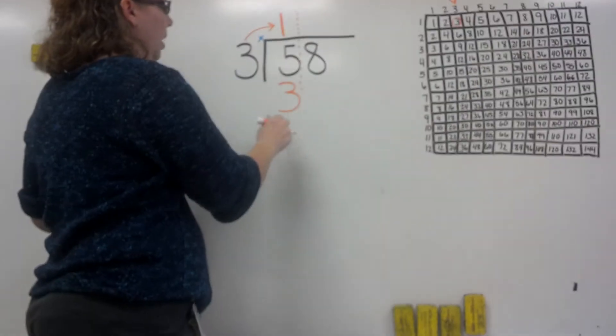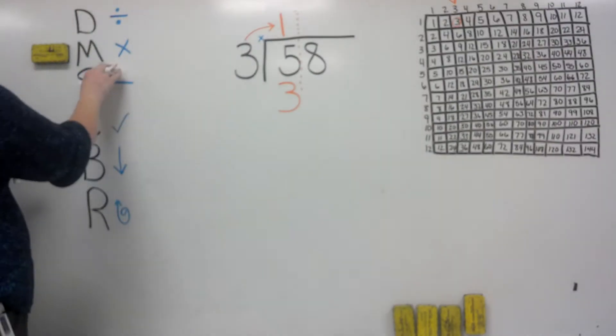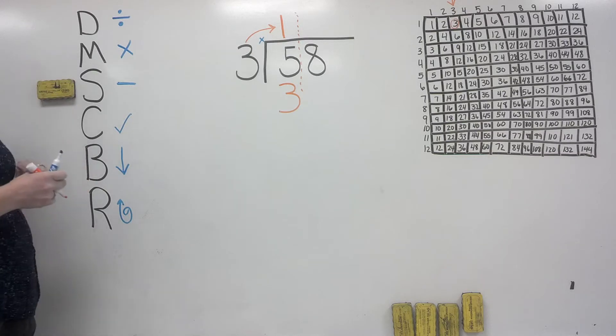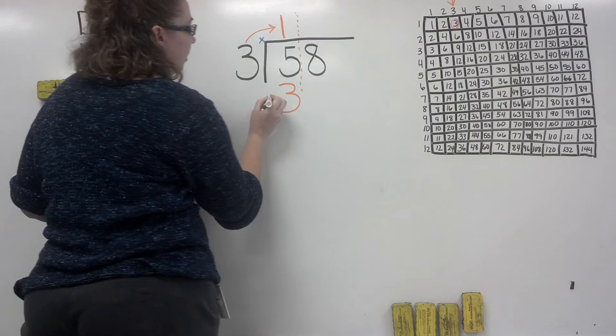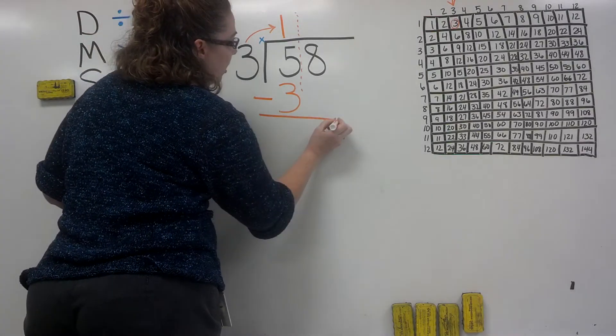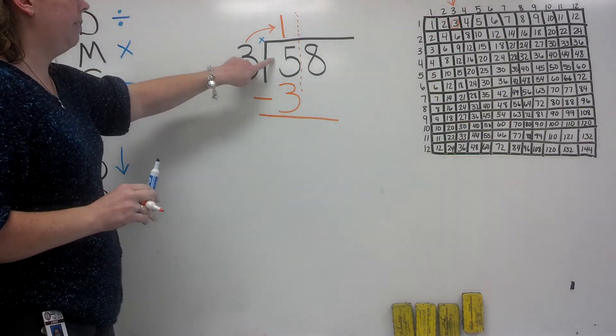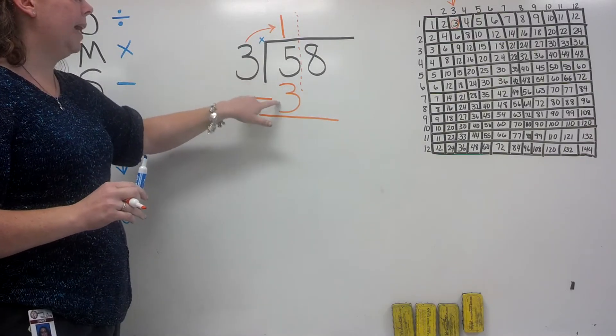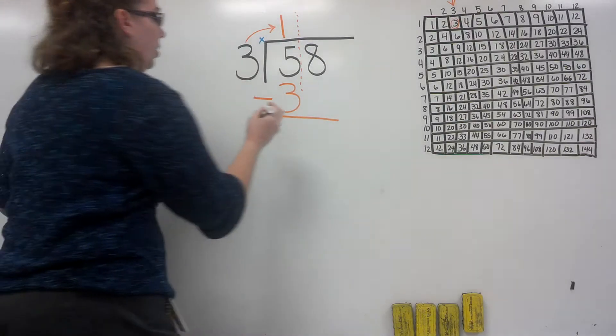We've done our multiplication step. The next step is subtraction. Make sure you write your subtraction sign. You're going to take 5 and subtract 3, so 5 minus 3 is 2.